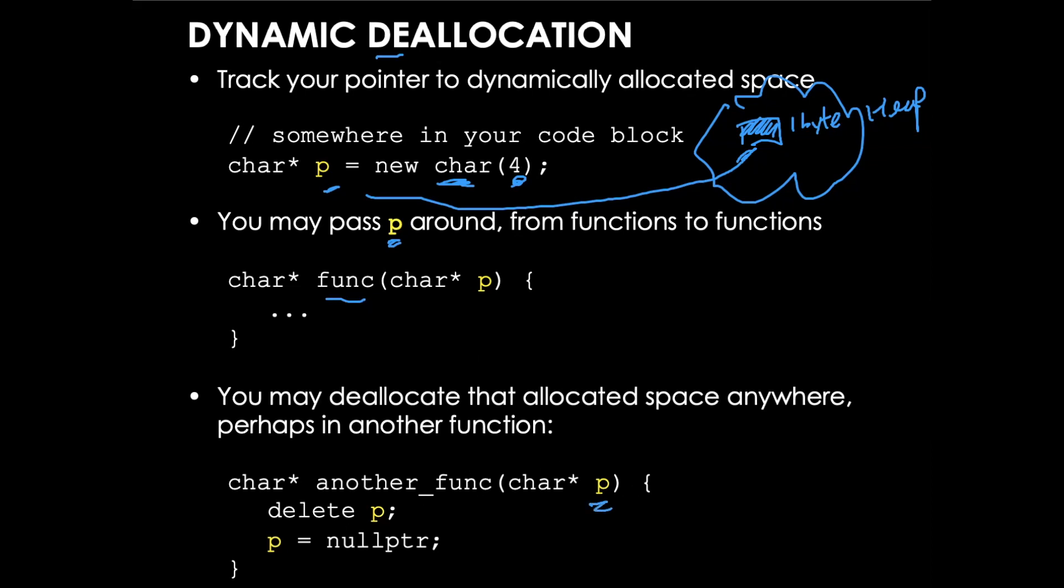But eventually at some point you're going to have to remember to delete p. You can delete p inside this another function, or you can decide to do that in your destructor if p is global. Failure to delete p will result in what we call memory leak.